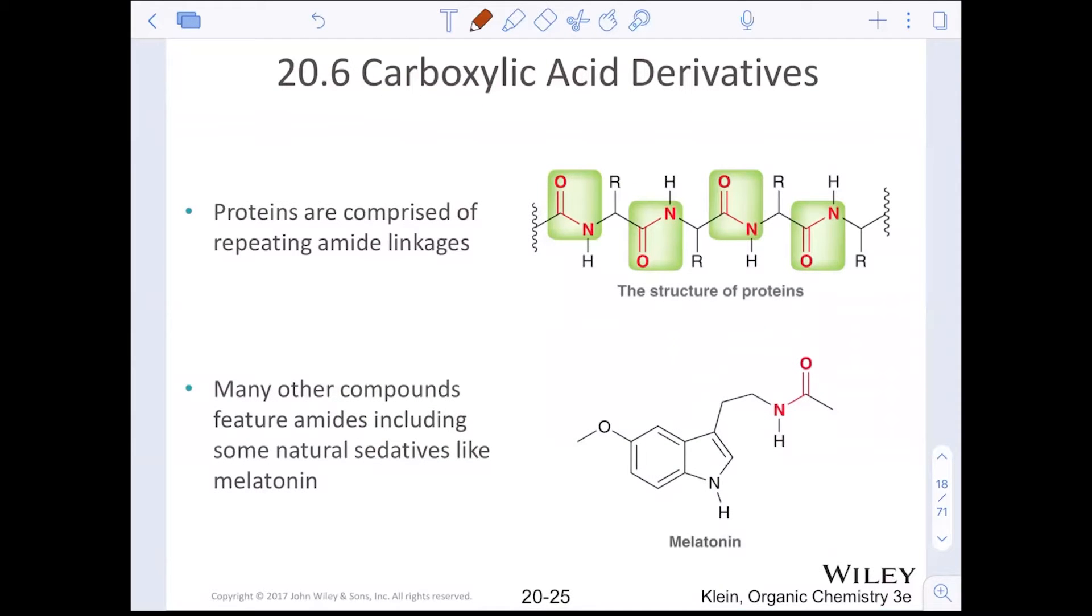Proteins are just amide bonds. If you call it a peptide bond, you're probably a biologist. If you call it an amide bond, you're an organic chemist. The repeating amide linkages create the structure of proteins. Amino acids are carboxylic acids and amines. When they react, the nitrogen moiety reacts with the carbon of the carboxylic acid moiety to make an amide, which we'll be able to do at the end of this chapter. Many other compounds feature amides, including natural sedatives like melatonin.